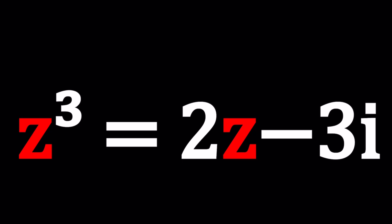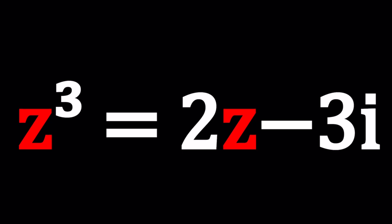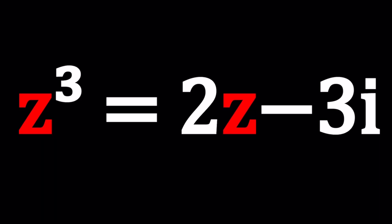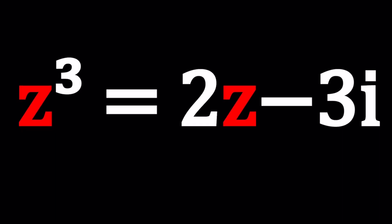So we have z cubed equals 2z minus 3i. We're going to be solving for z values, and this is an interesting cubic equation because one of the coefficients is imaginary. Let's use our imagination to solve this problem, and I'll be presenting two methods. Let's start with the first one.